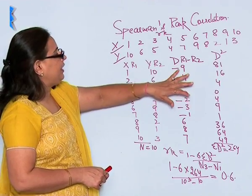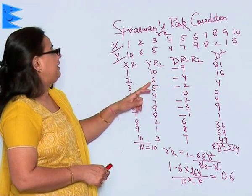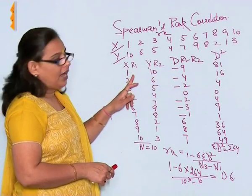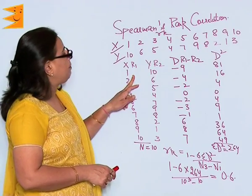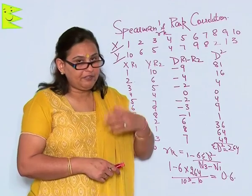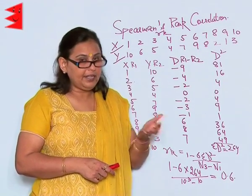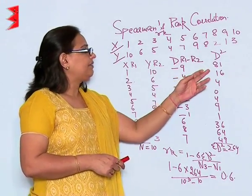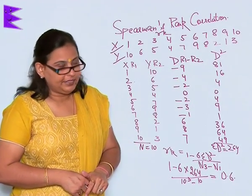After I take out the deviation by subtracting R2 from R1, that is Rank 2 from Rank 1, I will take out the deviation square. Whenever deviation square is taken out in any method, we always forget the positive and the negative signs.